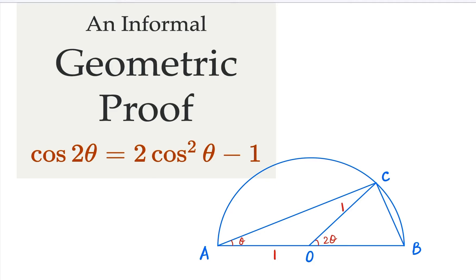The double-angle formula is probably one of the most important trigonometry identities. Here we look at cosine 2θ first, which equals 2 cosine squared θ minus 1. We're going to use a geometric construction to prove this.